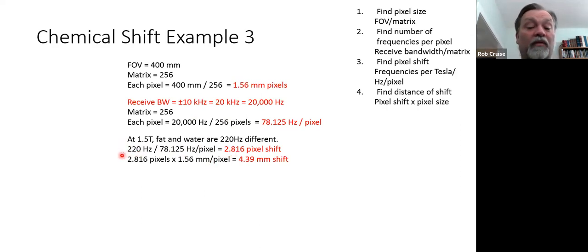Now our final step is we take our pixel shift of 2.816 and we times it by our 1.56, which we got up here in step number one, and we get 4.39 millimeter shift. That is not very good.